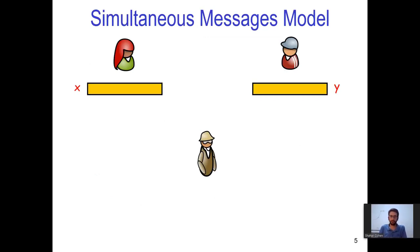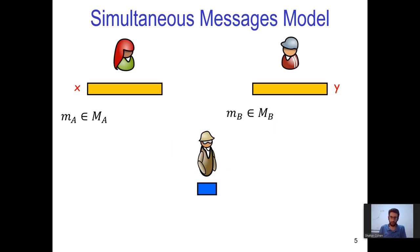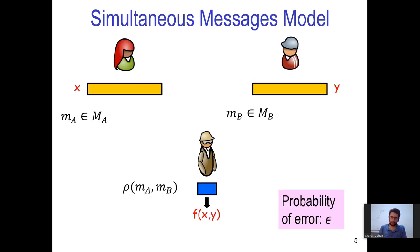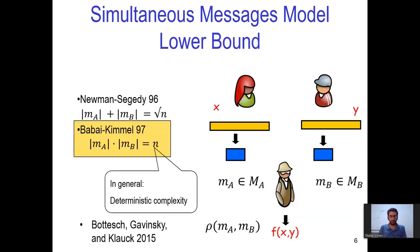In this model, Alice and Bob get their inputs and produce one message each. These messages are sent to a third party, a referee, who has to compute the target function with some constant high probability. For this model, with no common randomness, there is a known tight lower bound of square root of n, that was proven several times. See the paper of Baba and Kimmel for a description of a protocol that achieves the lower bound, and references for more such protocols.